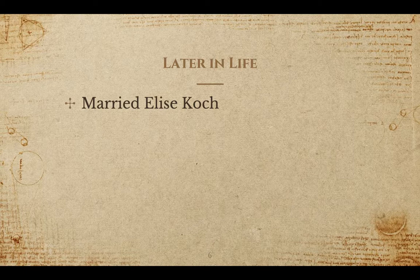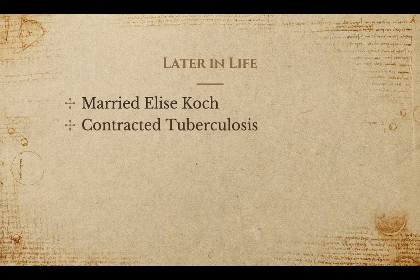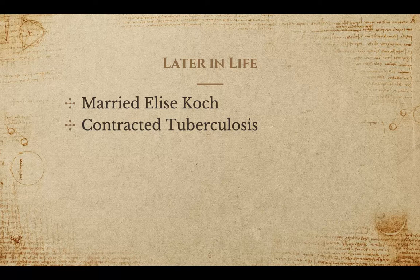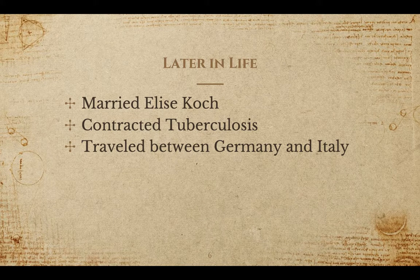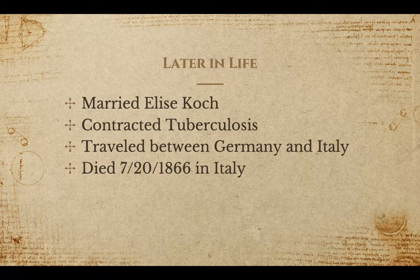Apparently, after gaining his professor title, he married Elise Cook. In 1862, Riemann contracted tuberculosis and then decided that it would be a great idea to continue traveling between Germany and Italy for the next four years. That traveling worsened his disease and ultimately caused his death in Italy in July of 1866.